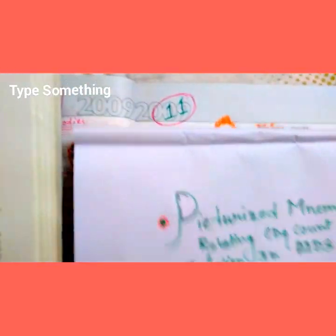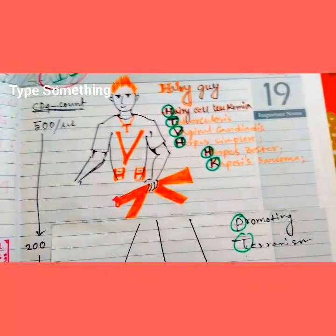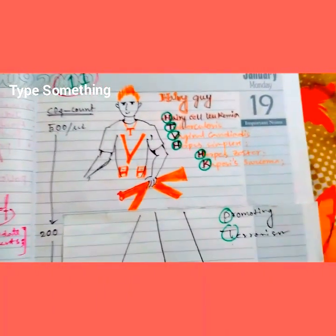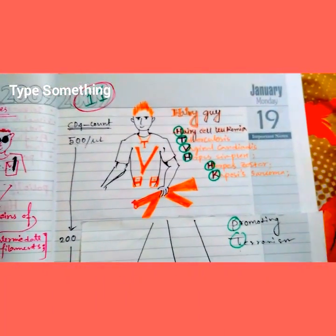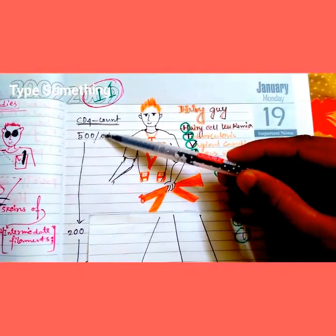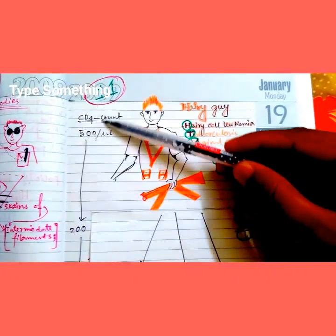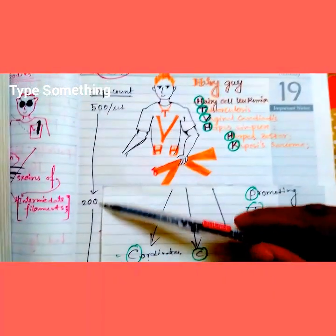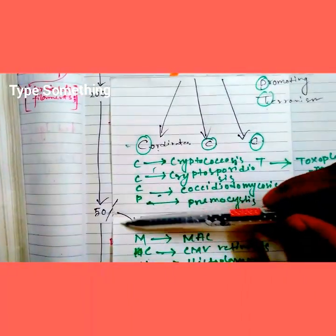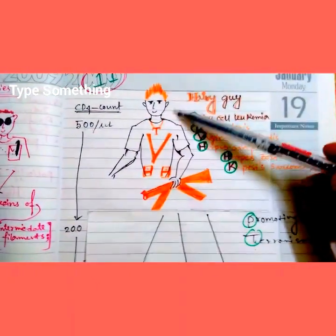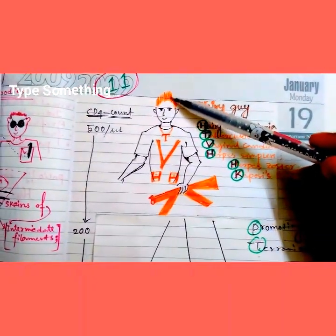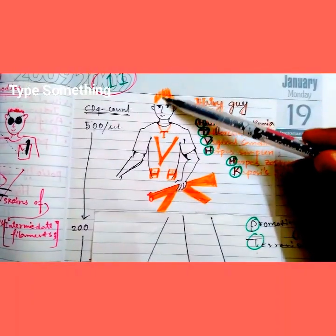Here comes the picturized mnemonic. The CD4 count levels shown are: 500 per microliter, 200 per microliter, and 50 per microliter. Here is the 'hairy guy' — he has typical hair, so his name is hairy guy.